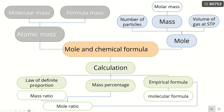Looking at this chart again — this is chapter 1. We are going to learn about mole and chemical formula. But first we need to know about atomic mass, which is used to calculate the molecular mass and formula mass based on the chemical formula. In this set of slides, we're going to learn about the mole, which is related to number of particles, the mass in terms of molar mass, and the volume of gas at a specific or standard temperature.